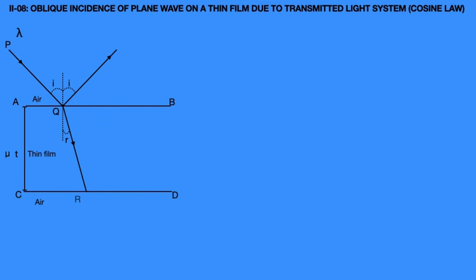Similarly, at point R, draw a normal, which also makes the same angle R. At point R, some part of the light ray is reflected and another part is transmitted. The transmitted light ray QR reaches point S, making an angle I with the normal — this is ray 1. The reflected light ray QR reaches point T on the upper surface AB, making an angle R with the normal — this is ray 2.